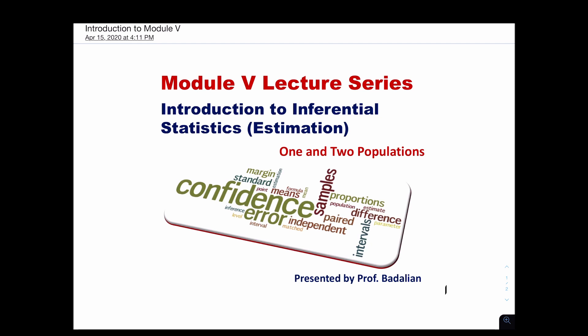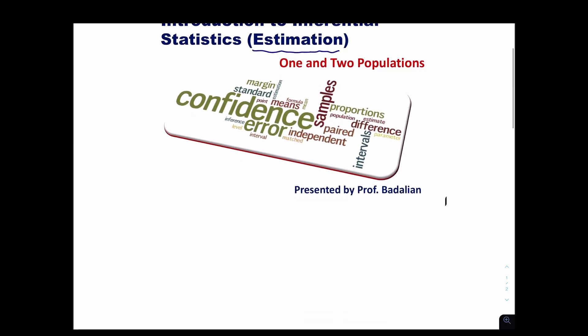Welcome to my video on module 5, the introduction to inferential statistics. Our topic for this module is estimation for one and two populations. As you can tell by the name, this is a chapter where you'll be estimating statistical variables such as the mean, the percentage, the standard deviation, the variation, the difference between two means, and the difference between two proportions. These are the things that fundamentally in inferential statistics a researcher would want to estimate.